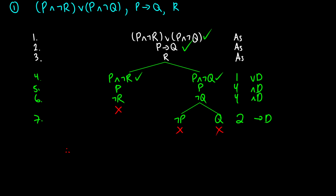All of our branches have closed. This is a closed truth tree. Therefore, we know that all of these formulas are inconsistent. That's how we do the first problem — it only had one conditional in it, but we had to use the conditional rule to make it work.